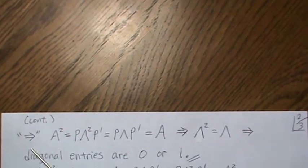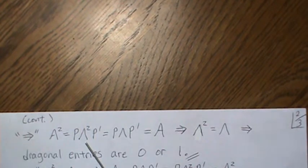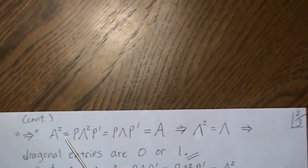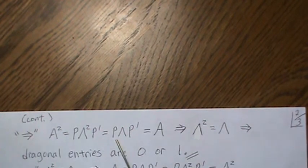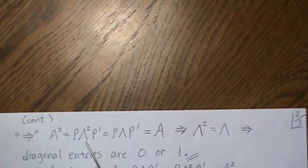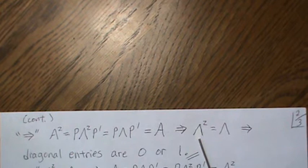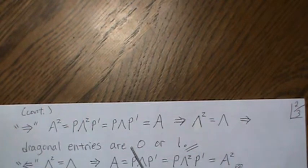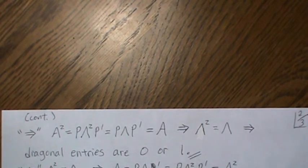To prove the forward direction, assume A is idempotent. So A squared, which equals P lambda squared P prime by the spectral decomposition, equals A, which is P lambda P prime. Since P is orthogonal, we can pre- and post-multiply by it, which implies lambda squared equals lambda. Since lambda is diagonal, the only way lambda squared equals lambda is if all diagonal entries are 0 or 1. But those diagonal entries are the eigenvalues, so the statement is true.